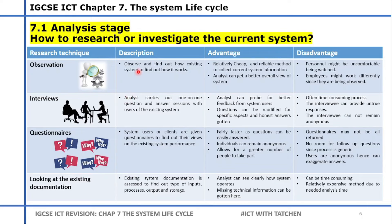The first way to research a current system is observation. If you're an analyst you need to understand how computers operate and observe the existing system to find out how it works. The advantage is it's a relatively cheap and reliable method to collect current system information, and analysts can get a better overview of the system. A disadvantage is that personnel might be uncomfortable being watched.